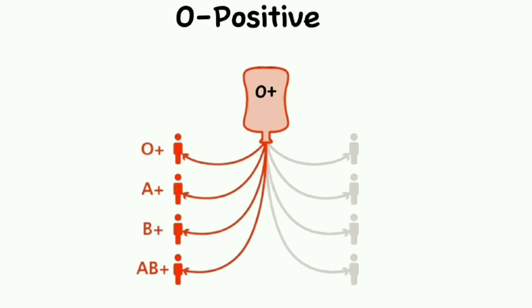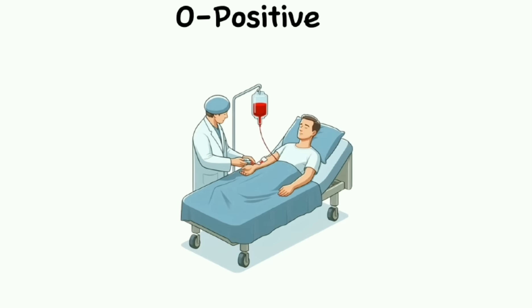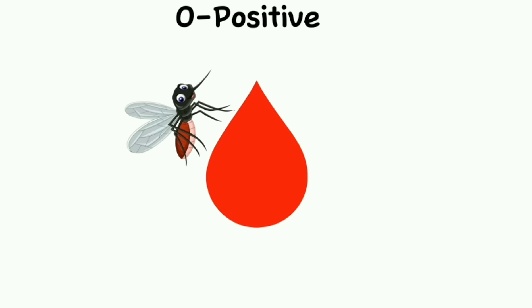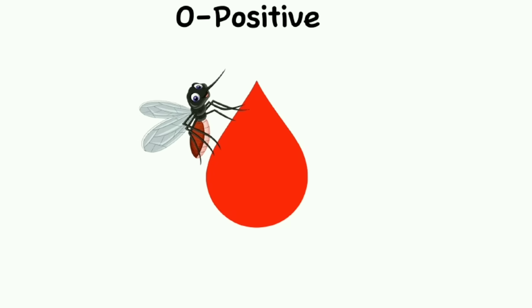People with O positive blood can give blood products to all with RH positive types like A positive, B positive, O positive, and AB positive, but can only receive blood from O positive and O negative donors. Interestingly, this blood type is known to attract mosquitoes more than others.